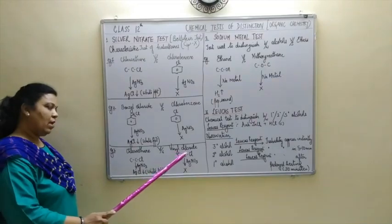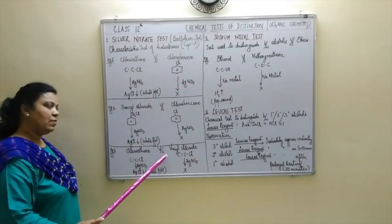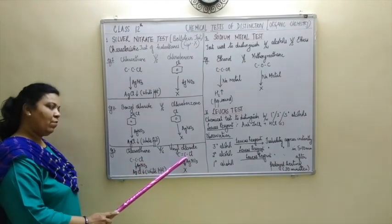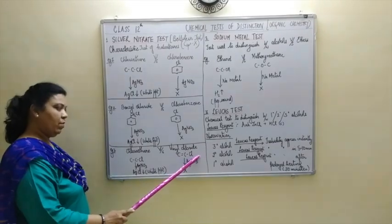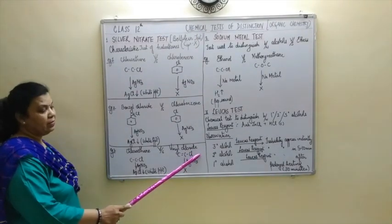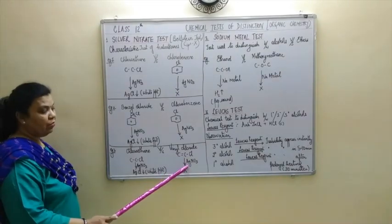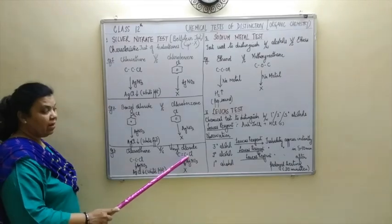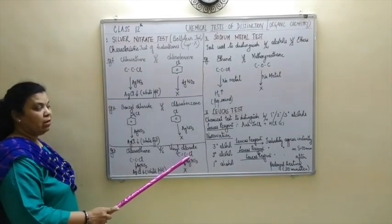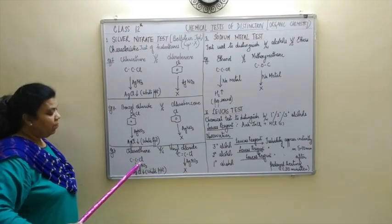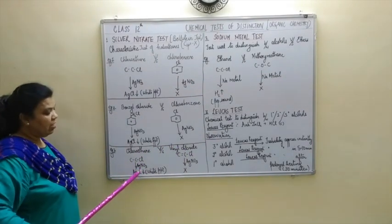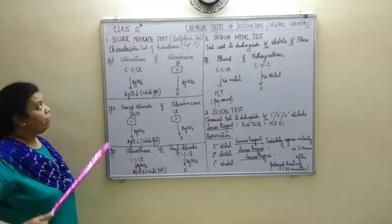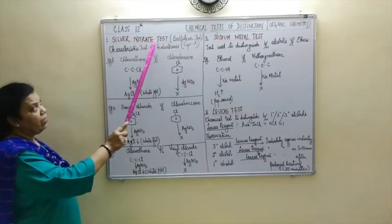Let us look at the third set: chloroethane versus vinyl chloride. Look at the vinyl chloride structure — the alpha carbon is in sp2 hybridization. Therefore on addition of silver nitrate to vinyl chloride, no observation will appear because, again due to resonance, a partial double bond character arises between the carbon-halogen bond. But there will be a white precipitate of AgCl on addition of silver nitrate to chloroethane. So I hope the silver nitrate test is clear to everyone.